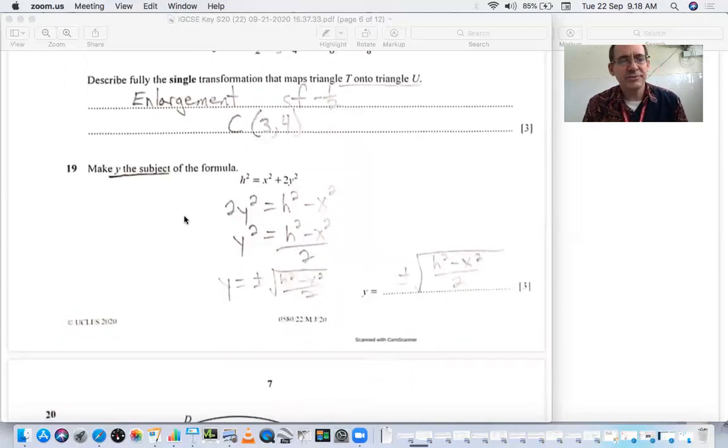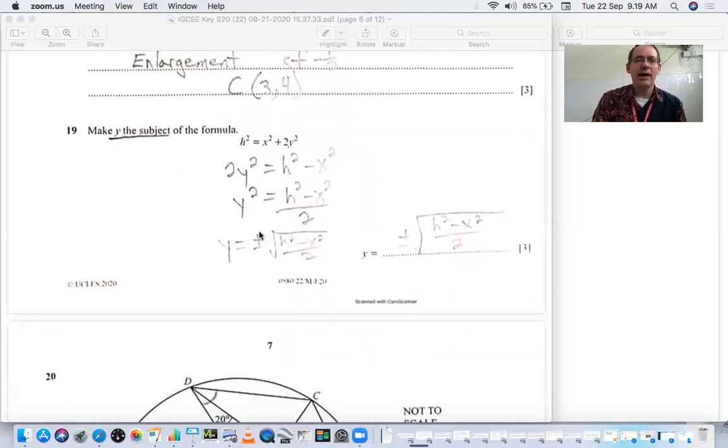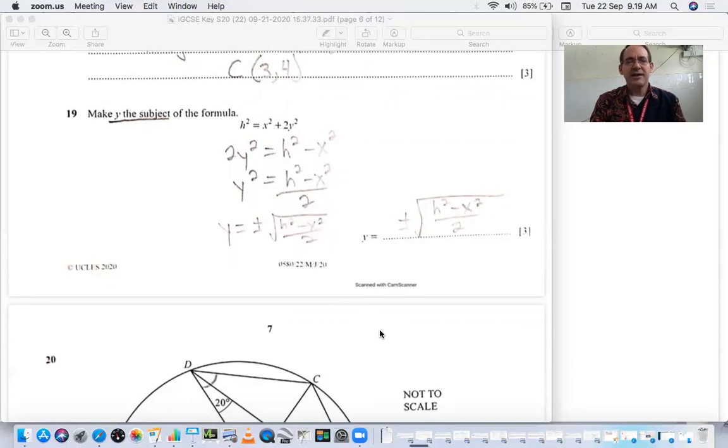Number 19, make Y the subject of the formula. Be careful here. You cannot just square root. Square root does not distribute across add and subtract. Square root only distributes across multiply and divide. So we need to subtract the X squared to the other side. Then we need to divide by two. We're trying to isolate the Y. Then at this point, we square root. It does not cancel anything because of this minus sign. So we leave it over the entire fraction. Technically, you should put plus or minus. Because when you square root, you have the positive and negative possible values of the square root of h squared minus x squared divided by two.